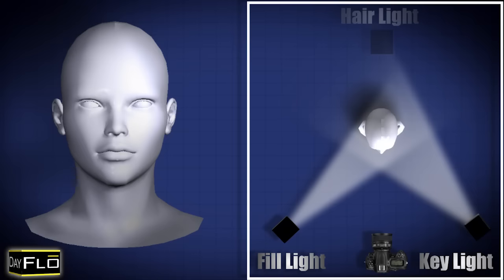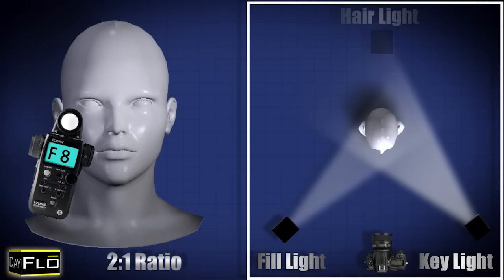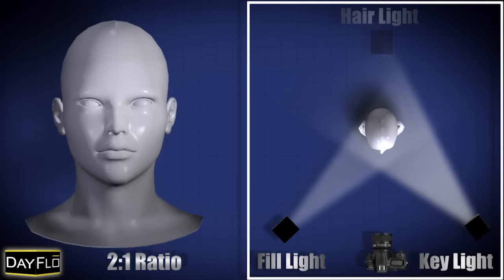2 to 1 ratio lighting. Your fill light will be 1 f-stop smaller than your key light. As an example, if your key light metered at f11, your fill light should meter at f8. This lighting scenario is typically used in basic press portraits, full length fashion images and general portraiture.